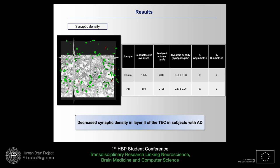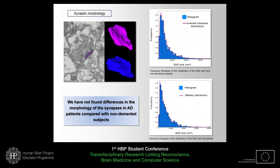In relation to synaptic density, we reconstructed around 1,000 synapses per case, differentiating between excitatory and inhibitory synapses. In relation to the proportion of both types of synapses, we didn't find a difference between Alzheimer's disease patients and subjects with no neurological alteration. However, the total synaptic density was lower in Alzheimer's disease patients.